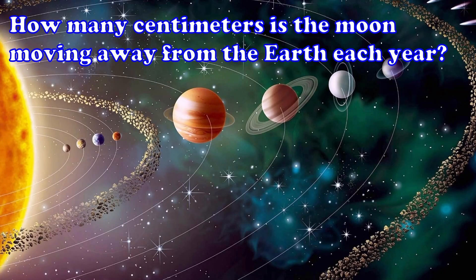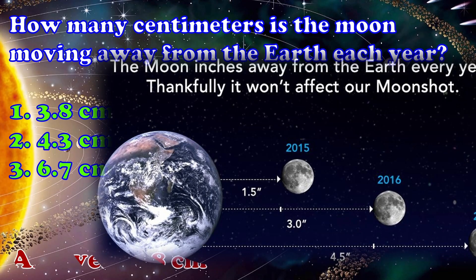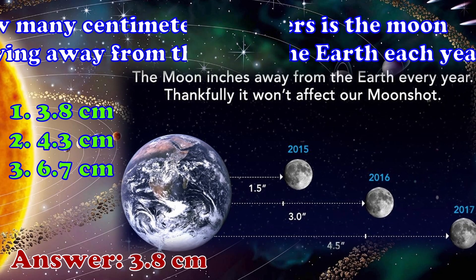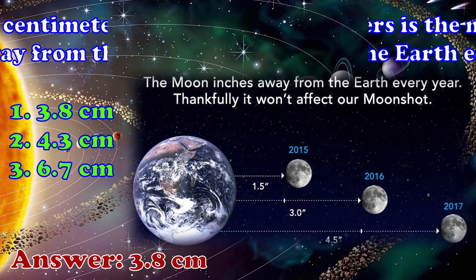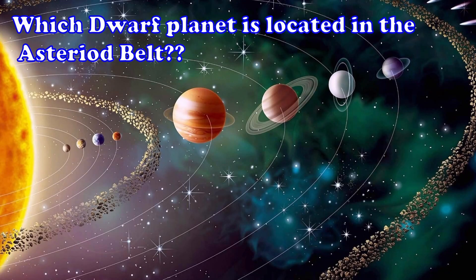How many centimeters is the Moon moving away from the Earth each year? 1. 3.8 centimeters 2. 4.3 centimeters 3. 6.7 centimeters. The answer is 3.8 centimeters.